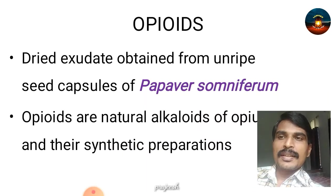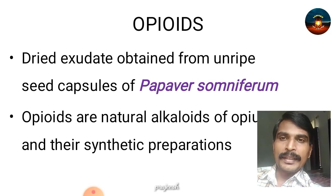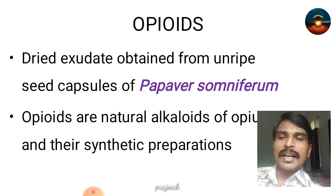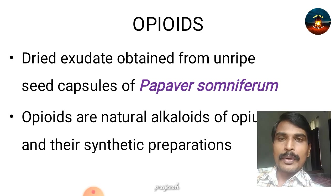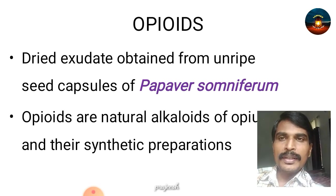So what are opioids? These are dried exudates obtained from unripe seed capsules of Papaver somniferum. Opioids are natural alkaloids of opium and their synthetic preparations — they can be natural as well as synthetic preparations obtained from the Papaver somniferum or poppy plant. These are collectively called opioids.